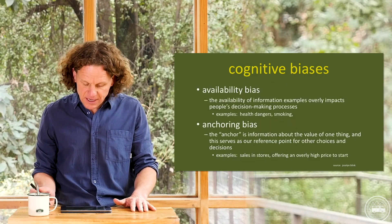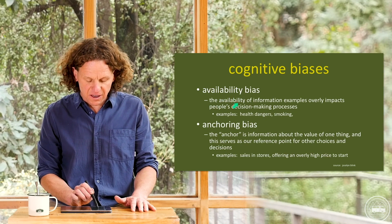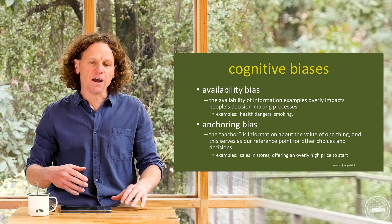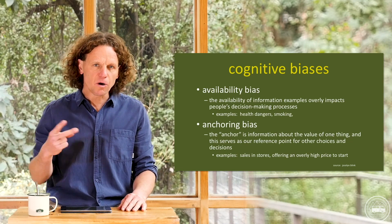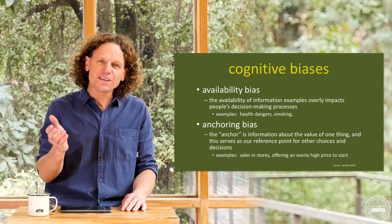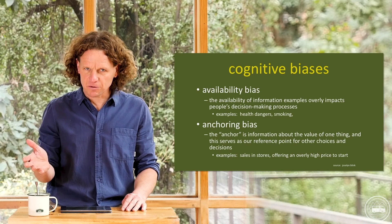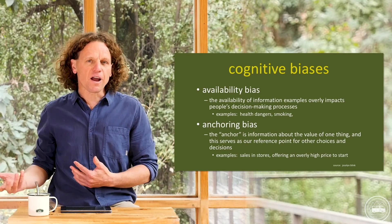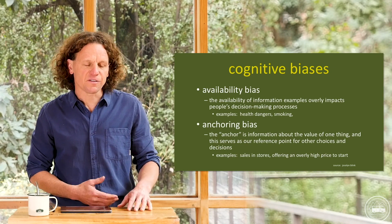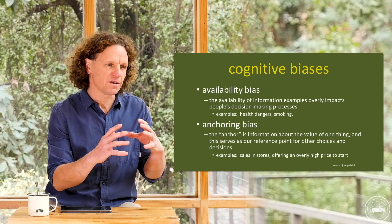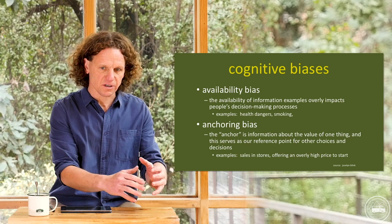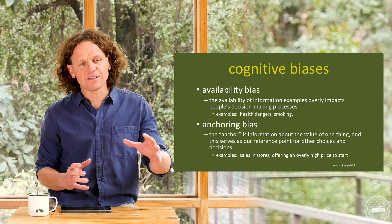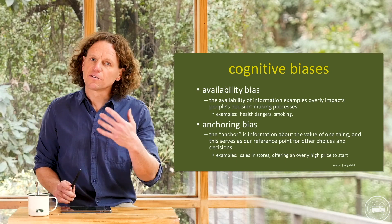First, availability bias — this is about the availability of information we have to make a decision. For example, if the only information you have is a 65–70 year old person in your family who has smoked for 50 years, you might conclude that smoking isn't so bad. A great example from Jocelyn Blink and Ian Dorton's course companion: if the only information available to you is that salmonella poisoning resulted from bad chicken sold in one country, you might be biased against buying chicken in your own country. That's availability bias.